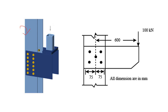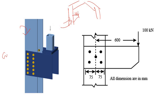Let's say you have a column and a rafter, and in between you have a bracket where you need to support some load. This type of connection is very common in case of a gantry girder, where you need to support the load coming from the gantry through a bracket attached to the flange of the column.